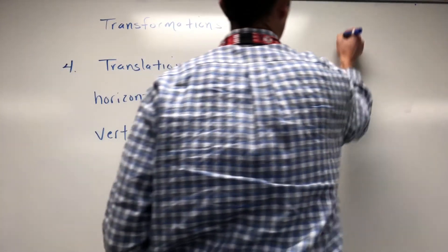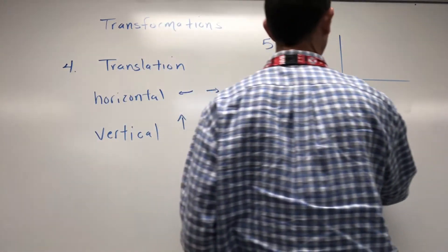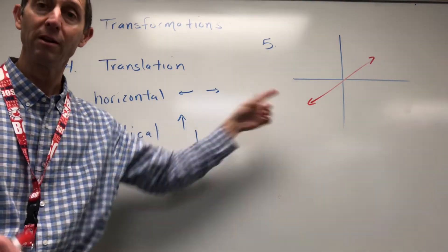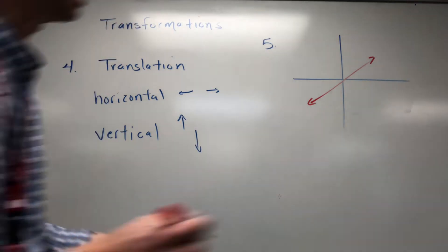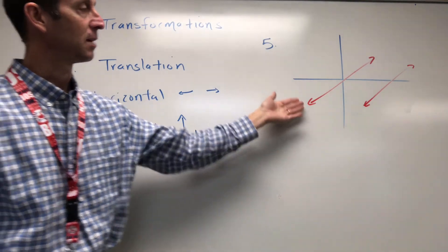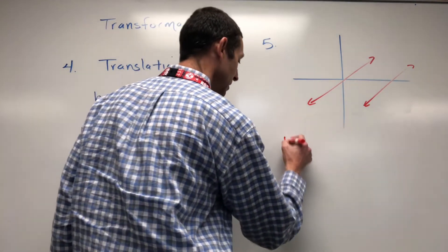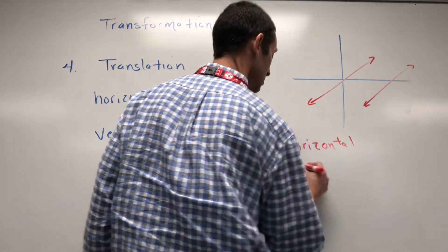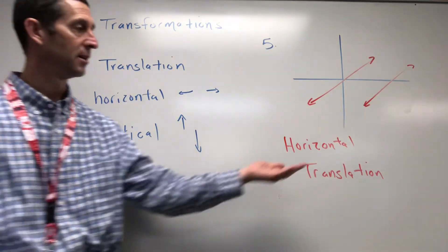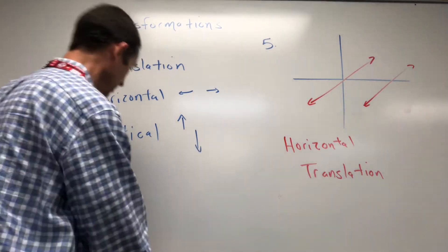Let's do an example. Here's your parent function — you can identify it as a perfectly straight line, so it's linear. Now if I give you a second function shifted to the right, that's a horizontal translation. If you move a graph left or right from its parent graph, that's a horizontal translation.